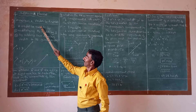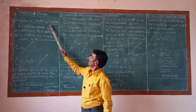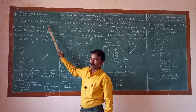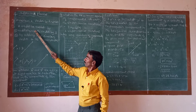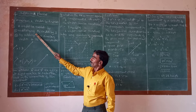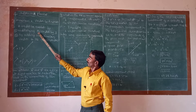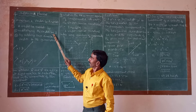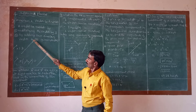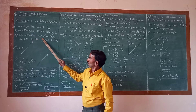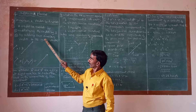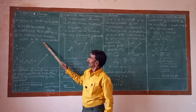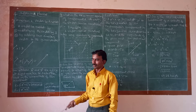How can a vector be tripled? A vector can be tripled by multiplying the vector by three, or by adding two similar vectors to the given vector.